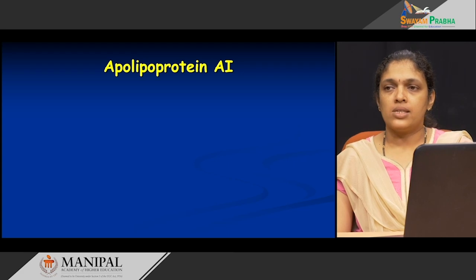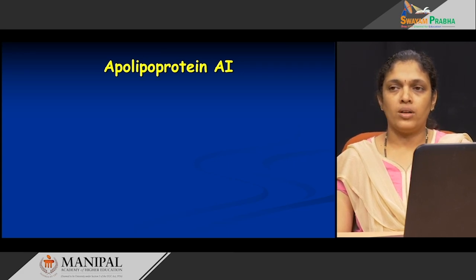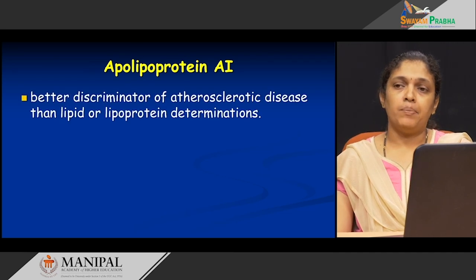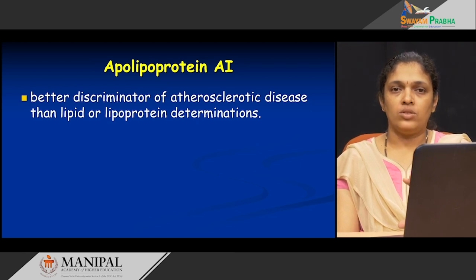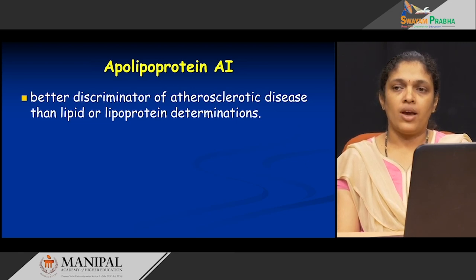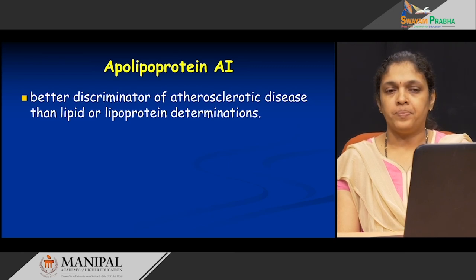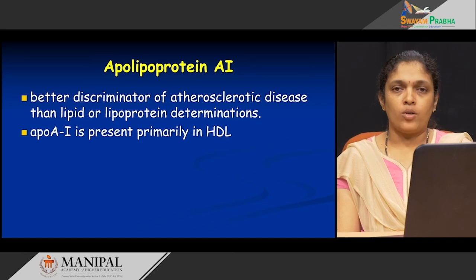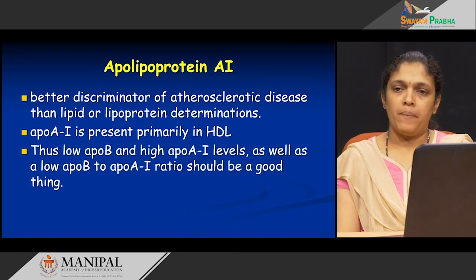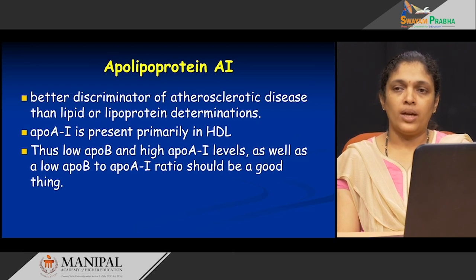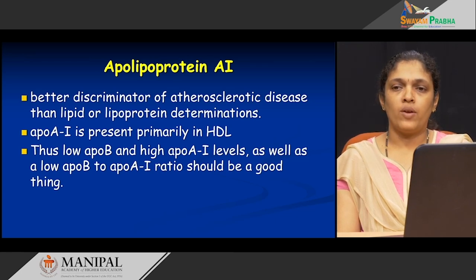Let us look at apolipoprotein A1 more closely. It acts as a better discriminator for atherosclerotic diseases than a simple routine lipid profile or just measuring lipoprotein levels in the blood. If you want to further explore the chances of having an atherosclerotic disease, it is always better to measure the levels of apolipoprotein A1. As already said, apo A1 is part of HDL, so higher levels of apo A1 are always better.